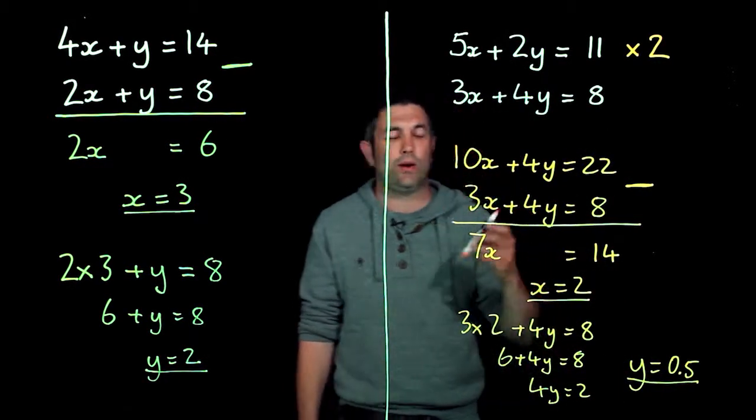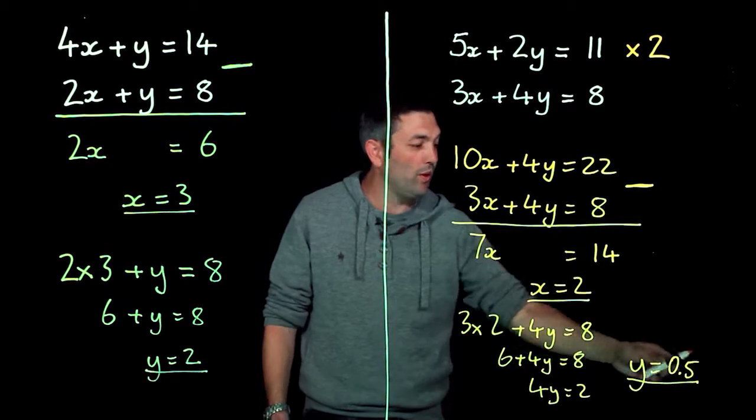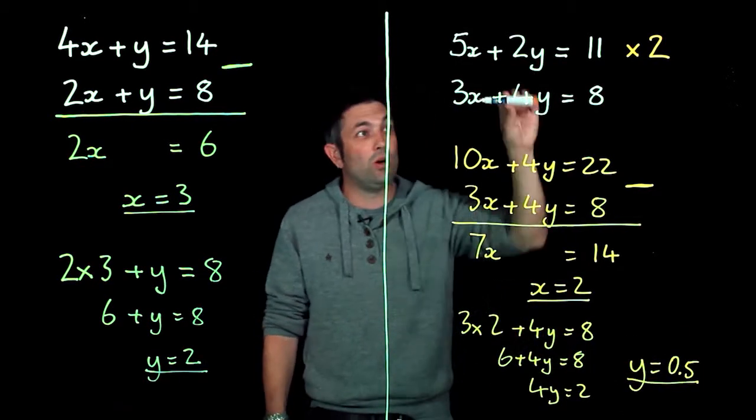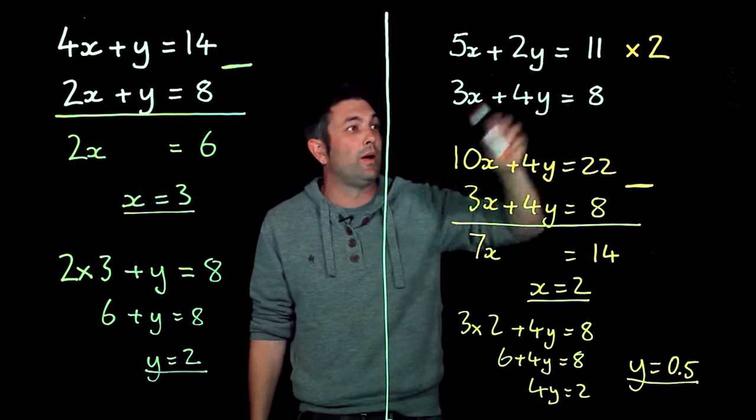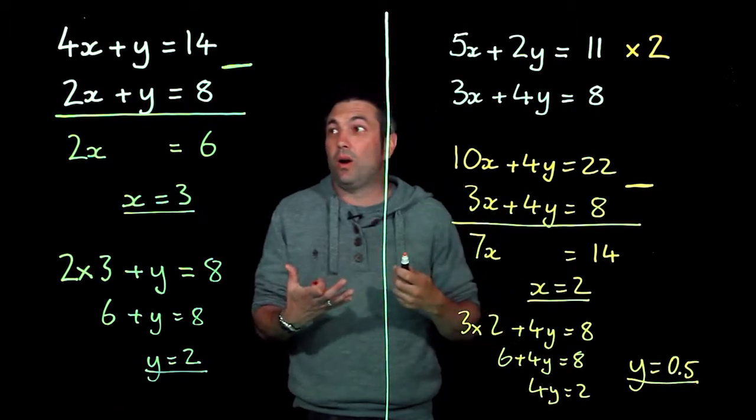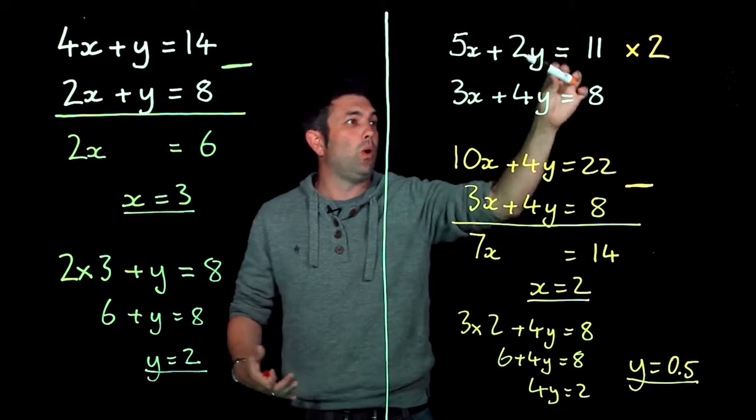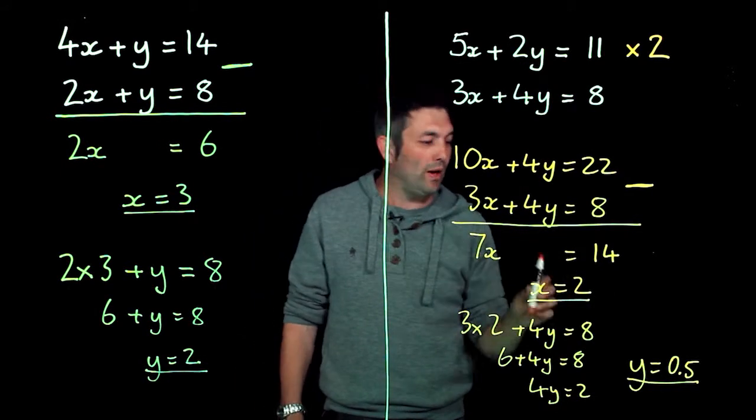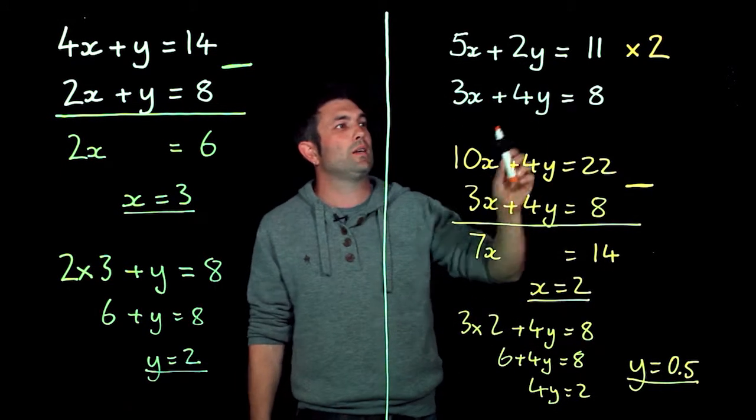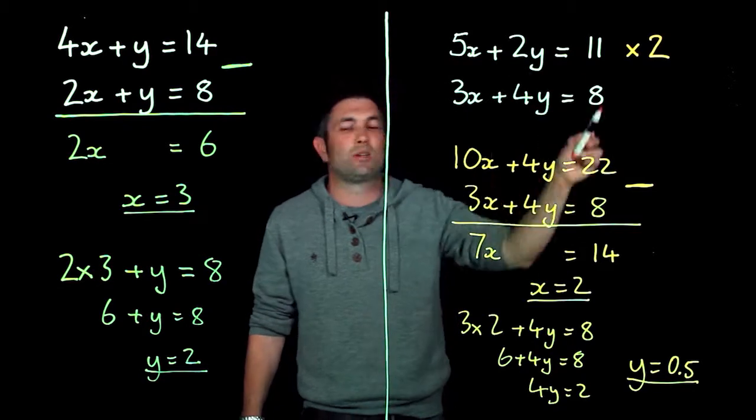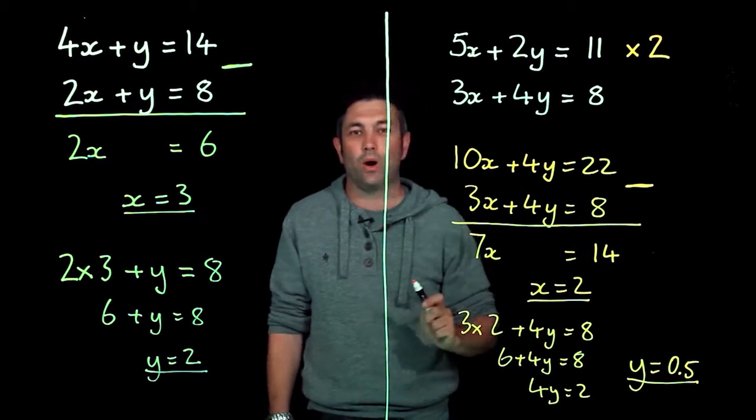Now bear in mind nowadays they used to make it pretty much all whole numbers, but they will chuck in halves and stuff so you can't just guess values for x and y. But doing this by elimination, I'm getting rid of the y's each time, finding what x is, and then once I've found what x is, I can then go back to my original equations and find what y is.